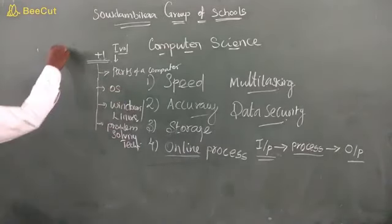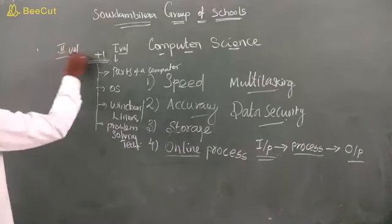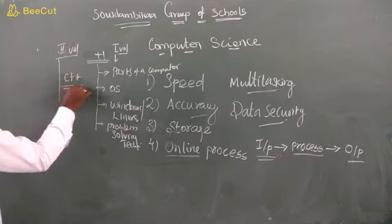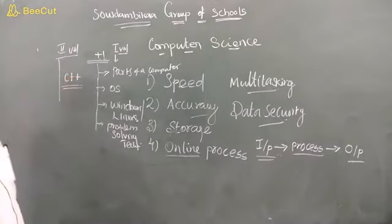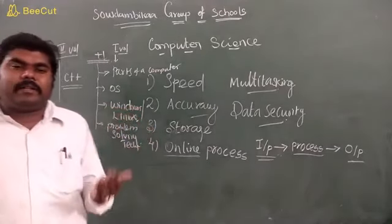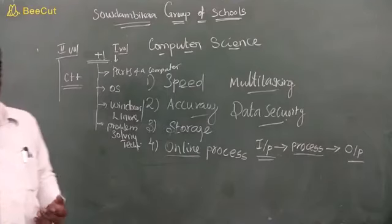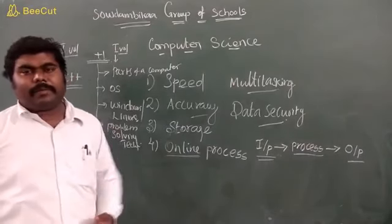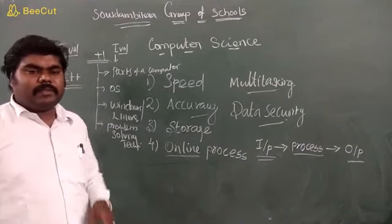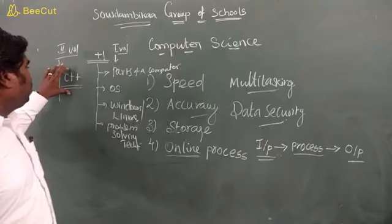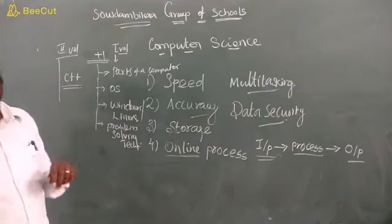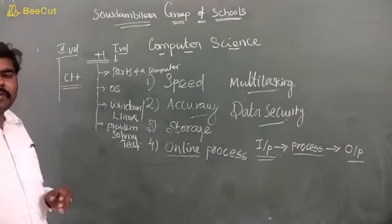In our second volume, we have only C++ programming. C++ is a programming language. It is an object oriented programming language and also structure oriented. So it is hybrid. We have to basically know C++ programming because C++ is for further studies if you are going to B.E., B.C. Computer Science or PCM, whatever it may be.